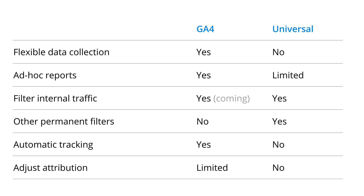Google Analytics 4 gives you complete flexibility in the way you collect data. There is a range of reporting options, including ad-hoc reporting to meet your needs. The option to filter out your internal traffic is coming. Other than filtering internal traffic and developer traffic, there aren't currently any other filtering options, however I expect we'll see this change in the future. You can make some limited changes to the attribution model used for your reports, and I also expect to see the options expanded in the future.